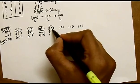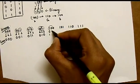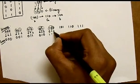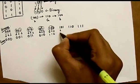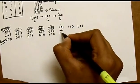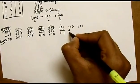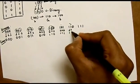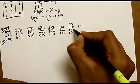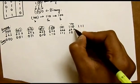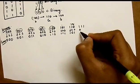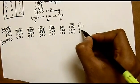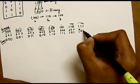MSB is the same. 1 and 0 XOR is 1. 0 and 0 XOR is 0. 0 and 0 XOR is 1. MSB is always the same. 1 and 1 XOR is 0. 1 and 0 XOR is 1. MSB is always the same. 1 and 1 XOR is 0. Again 1 and 1 XOR is 0. That is the equivalent gray code.